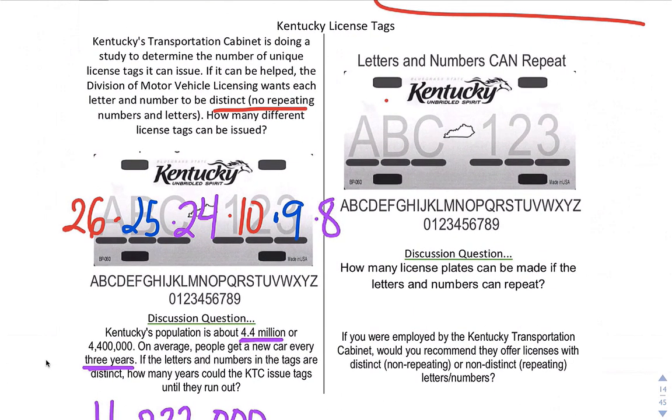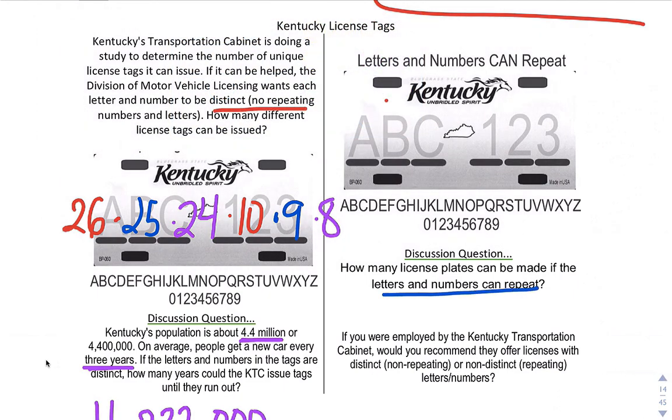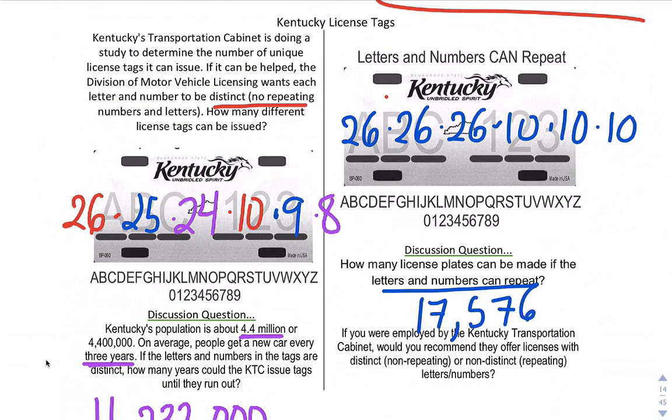Next one: What if the letters can repeat? So here, numbers and letters can repeat. So you would have 26 choices for each of the first three letters. You would have 10 choices for each of the following three numbers. And if you multiply that out, it is 17,576,000.